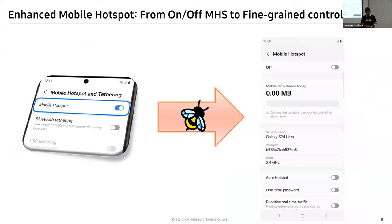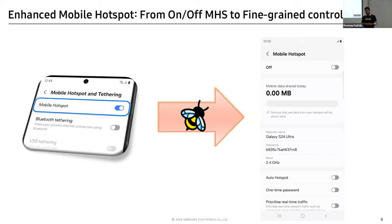The old hotspot screen — about 5 years ago — just let you turn on or off the hotspot with some band settings or password changes. With eBPF, we can now monitor your mobile data rate specifically. With per-day plans like 1.5 GB or 2 GB, we can monitor mobile data and Wi-Fi sharing separately.